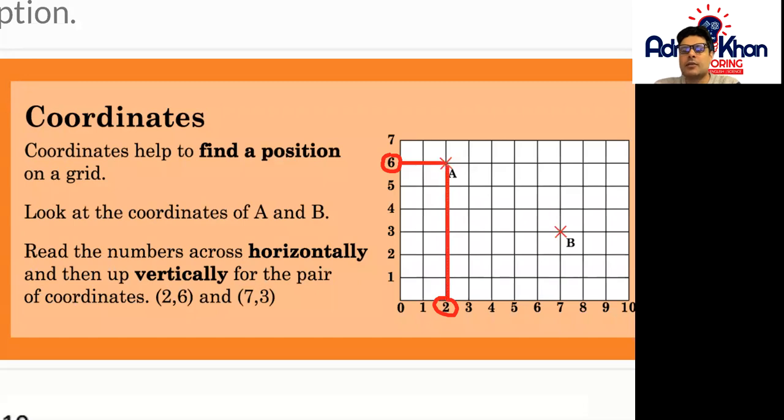So our answer in this case is going to be 2 comma 6 and we write it exactly like this. Okay so A stands for 2 comma 6.